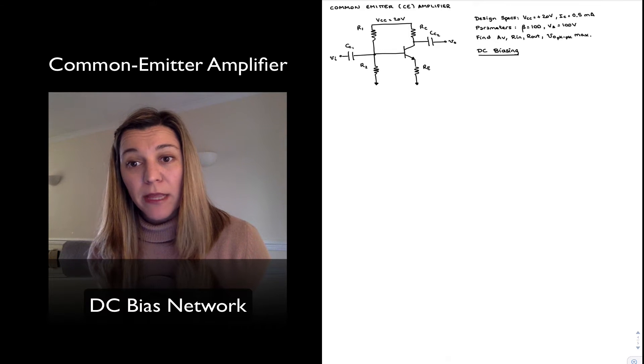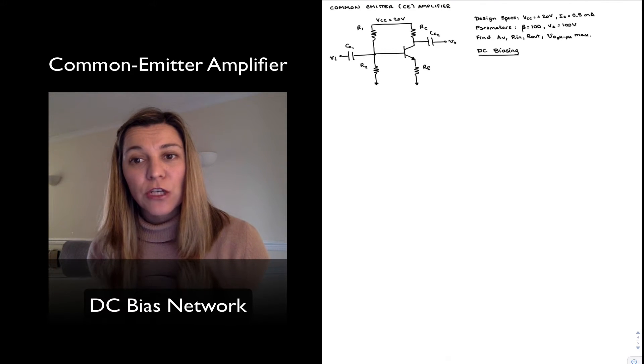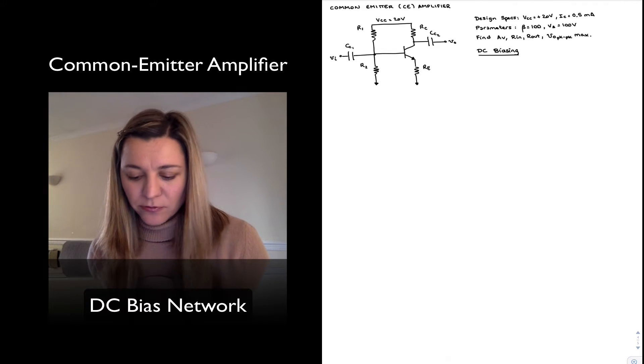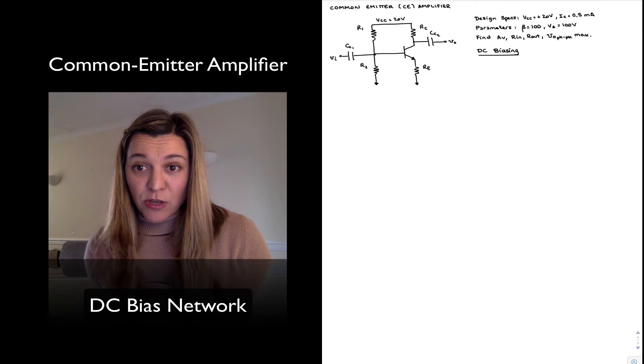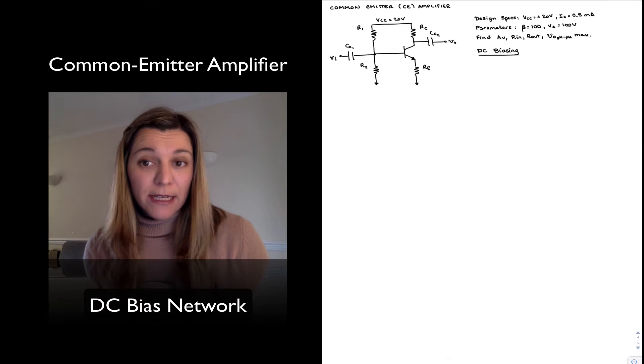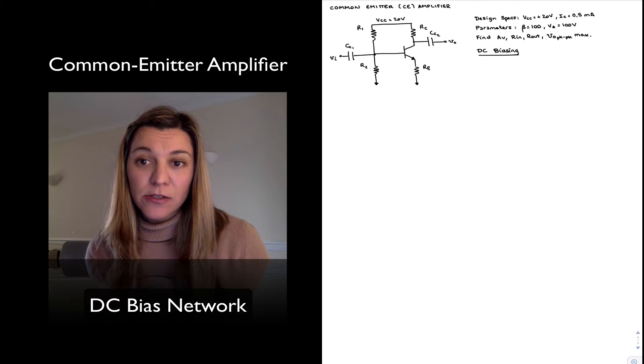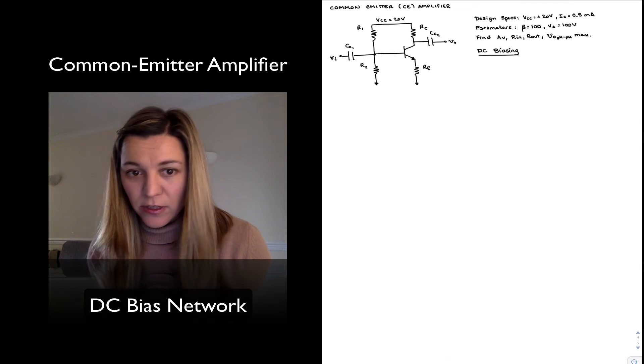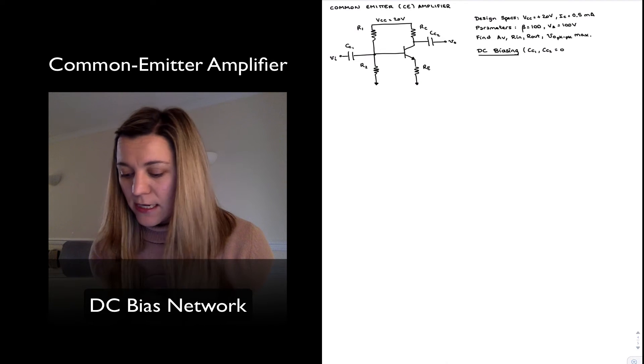Those coupling capacitors are in place to make sure that the input signal does not interfere with the DC operating point of the circuit. So what I expect is that those capacitors will behave as open circuits to DC signals and as short circuits for AC signals. And so for the DC biasing purpose we are going to assume that CC1 and CC2 behave as open circuits.